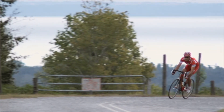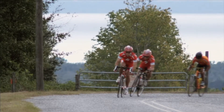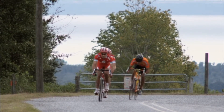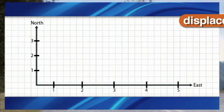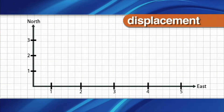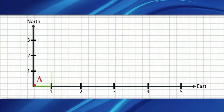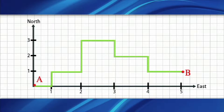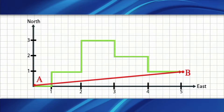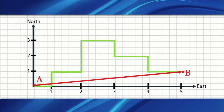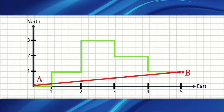Kinematics deals with three factors: displacement, velocity, and acceleration. Let's look at displacement. In this example, an object moves from point A and follows a route to point B. The object has changed its position and traveled five units east and one unit north. This measurement is known as displacement. Displacement is a vector quantity that measures the distance between the points in which an object has traveled.